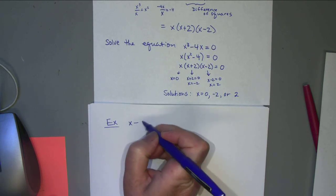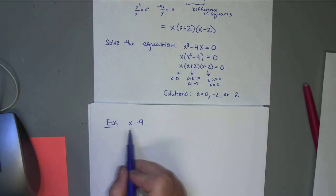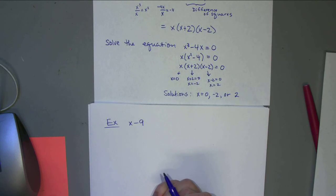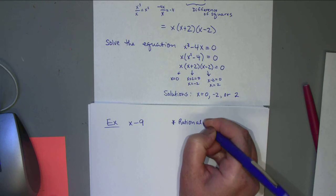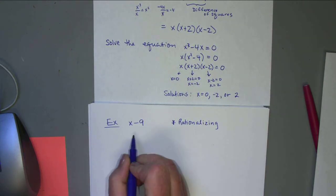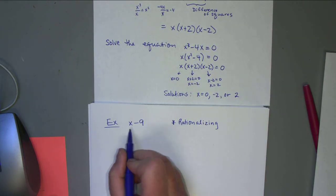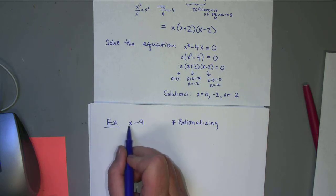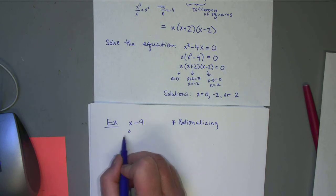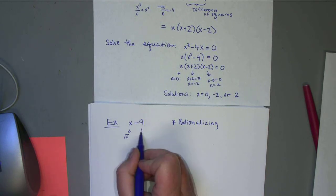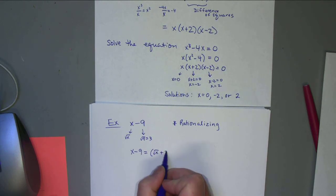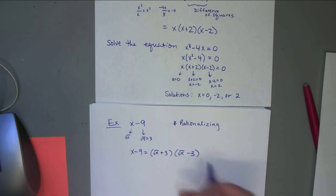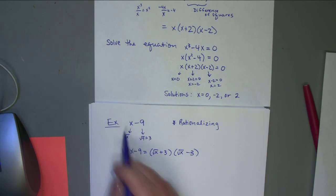You could also use difference of squares to factor something without x² — though this is mainly used when rationalizing, sometimes in calculus. For example, x - 9: the square root of x is just √x, and the square root of 9 is 3. So you could write x - 9 as (√x + 3)(√x - 3). If you FOIL that out, you get back to x - 9.